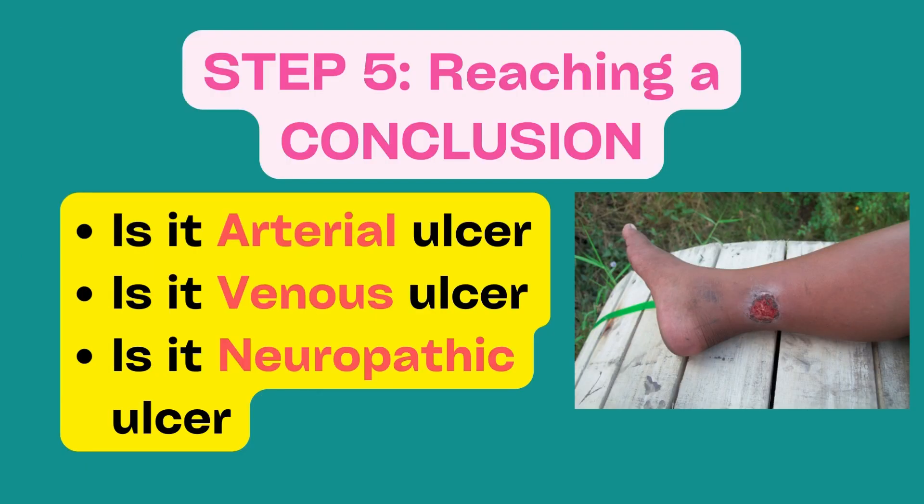After describing the ulcer, the examiner wants you to come to a conclusion. The conclusion he is looking for is: what type of ulcer is it? Is it venous, or arterial, or neuropathic? This is very crucial, so the candidate must know the different characteristics of each type of ulcer.